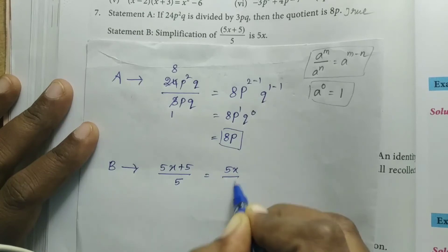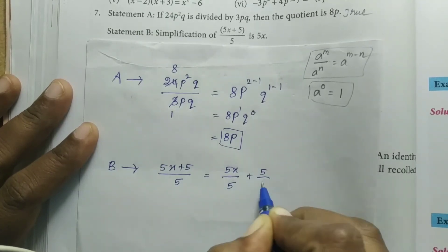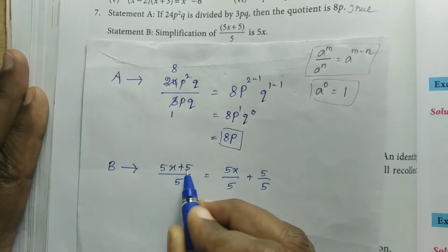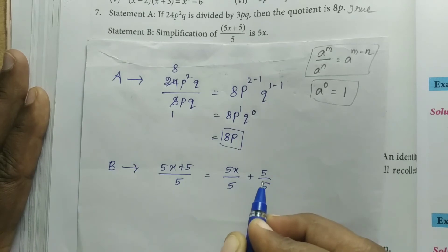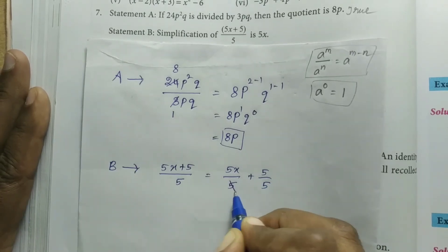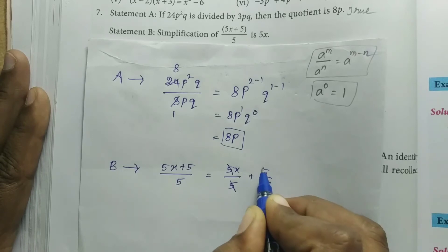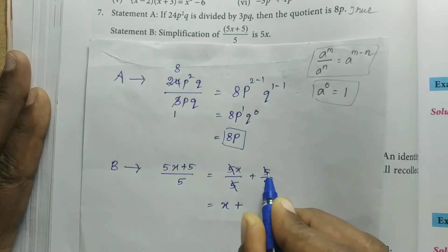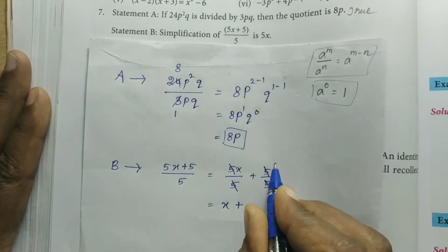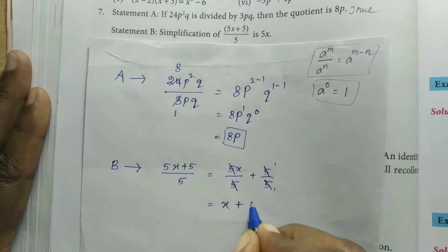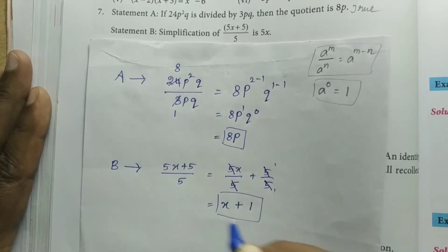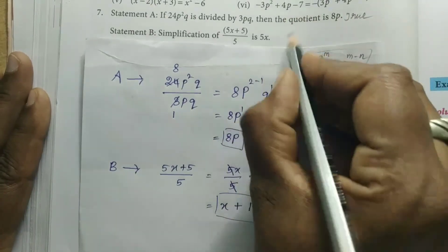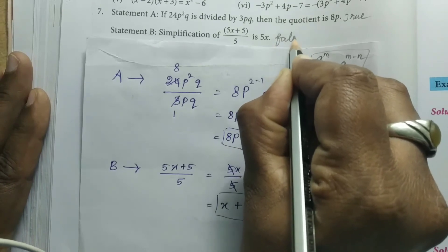So we separate it as (5x divided by 5) plus (5 divided by 5). The 5 in the denominator is common throughout. Now crossing: 5 into 5 is 1 time, so 5 cancels — the remaining term is x. Then 5 into 5 again cancels, giving 1. So the answer is x + 1. But the statement claims 5x, so this statement is FALSE.